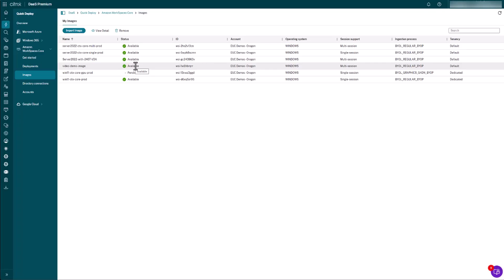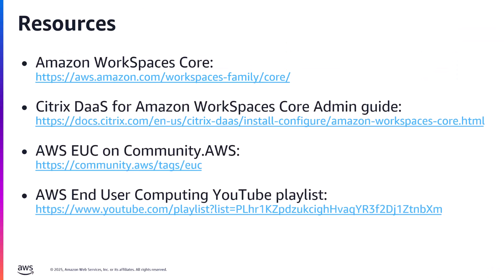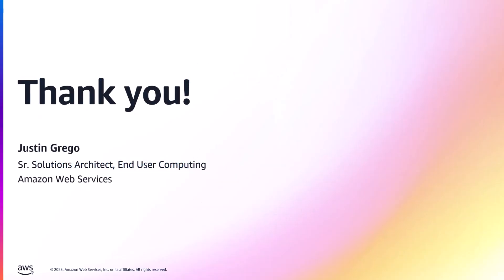In the final video, we'll cover how to create a deployment that stitches together all the different pieces we've built over the last four videos. That concludes this visual walkthrough of creating your first Citrix on WorkSpaces Core image. On-screen you'll see resources providing additional information on Amazon WorkSpaces Core, the full administration guide, the AWS EUC community, and YouTube playlists. In this video's description you'll also find links on the BYOL image process and more reading on Amazon WorkSpaces Core. Thank you for your time today — I look forward to bringing you the final step in this deployment process in the next video, where we'll create a deployment pulling together everything we've built. Take care.